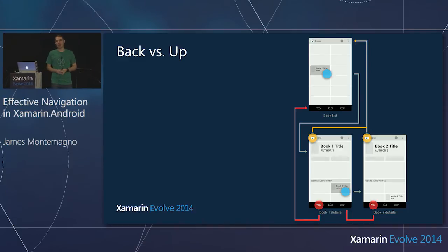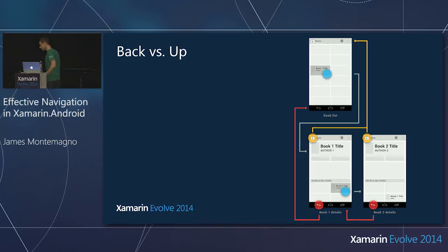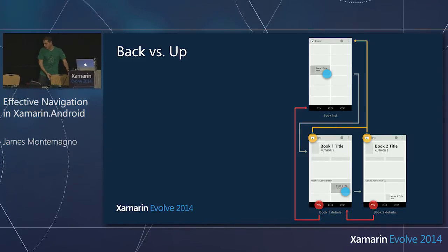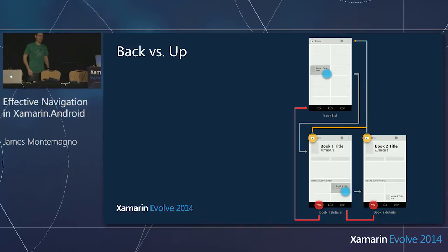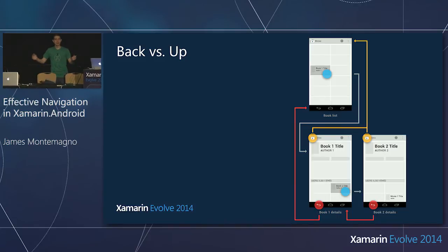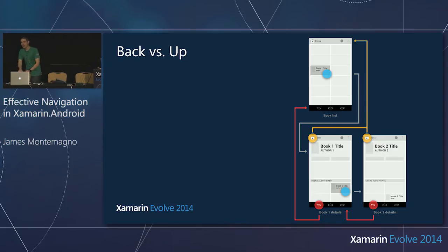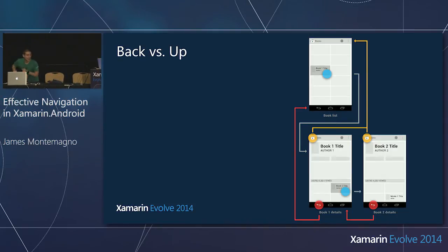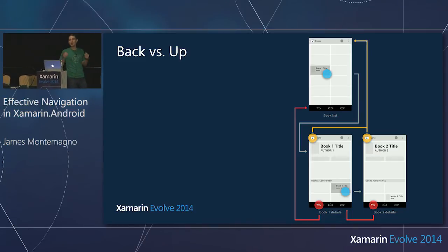Back versus up: as I navigate through my application, I have three screens. Home page, detail page, deep dive page. I start on my home page, I navigate forward, I hit the back button — I go back. When I navigate to another page and hit back, I go back. But when I'm on a deep page and I hit up, I go all the way back to my home. Just let your users go home. It's one of the most powerful things we can do in Android.